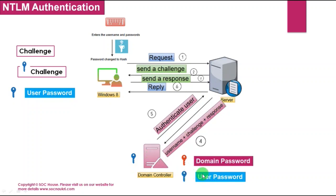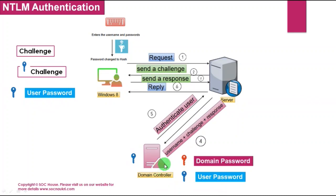The domain controller already has the user password in the Active Directory. The user password hash is used to encrypt the data, and it is also used to decrypt the data. If the user password is correct, the hash value will be the same. The domain controller checks the password hash for the given username, decrypts the encrypted data, and compares the request and response. If both match, the entered credentials are correct, and the domain controller authenticates the user, allowing the server to grant access to the resources. With this authentication protocol, the user password is never transferred over the network.